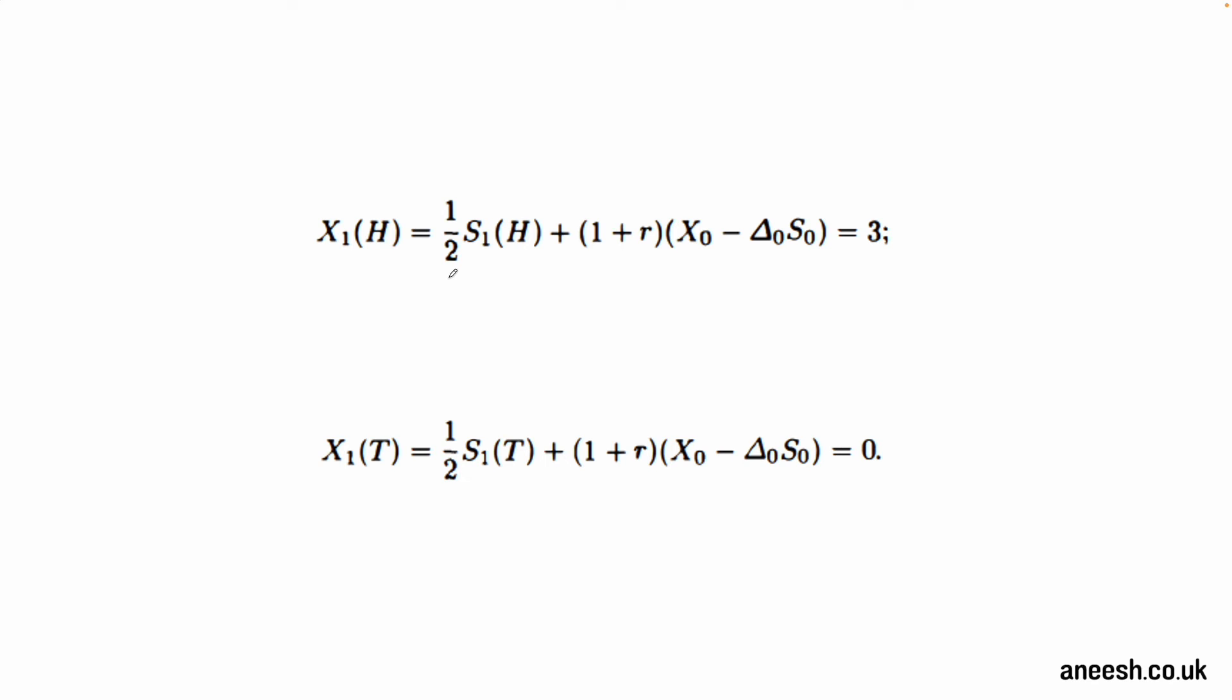Now we're introduced to X1H and X1T, and these represent the value of our position at time 1 given a heads or tails coin flip. At time 1, the value of our stock can be either 4 or 1. This is because we've only purchased half a stock with a delta of 0.5. Therefore, our cash position of heads denoted by X1H is given as half of S1H plus our position in the money market. Our position in the money market, as mentioned before, is negative 1 as we must borrow 0.8 to fund the purchase of half a stock and then we multiply that by 1.25.